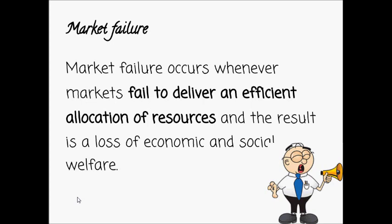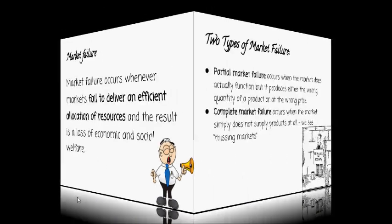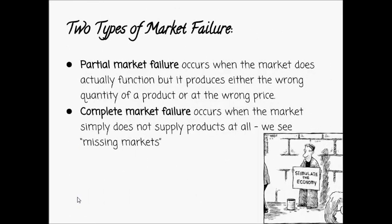There are two types of market failure: partial and complete. Partial market failure occurs when the market does actually function but either produces the wrong quantity of a good or at the wrong price. For example, if the economy only outputs 500,000 iPhone 5s and demand calls for 1 million, the market has partially failed. Complete market failure occurs when the market simply does not supply products at all.